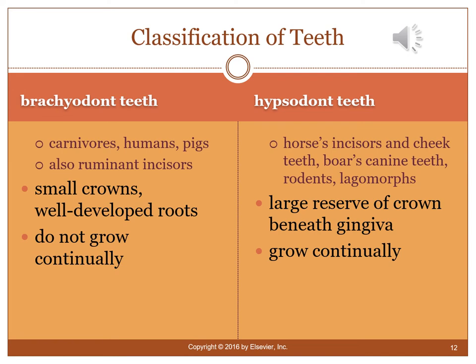There are two classifications of teeth: brachydont and hypsodont. Brachydonts are found in carnivores, humans, pigs, and ruminant incisors — they have small crowns with well-developed roots and do not grow continually. Hypsodont teeth, found in horses, rodents, and lagomorphs such as rabbits, need to be constantly ground down. If not worn down, they can grow into the roof of the mouth or cheeks, causing pain and digestion issues. Hypsodont teeth have a large crown reserve beneath the gingiva and grow continually.